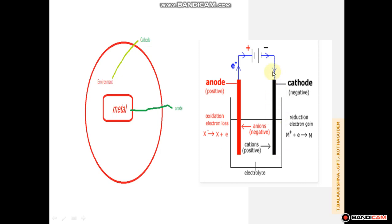The metal has to be connected to a power supply or battery. There are two metal rods dipped into the electrolyte solution. The metal rod connected to the negative terminal of the battery acts as a cathode. So the metal rod connected to the negative terminal of the battery is the cathode.